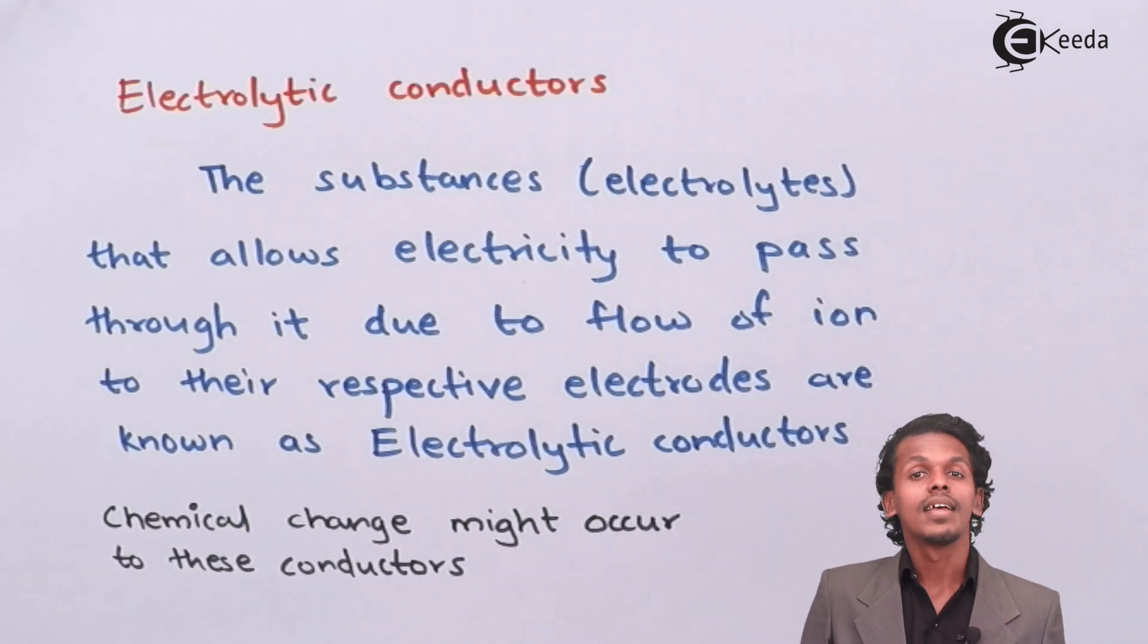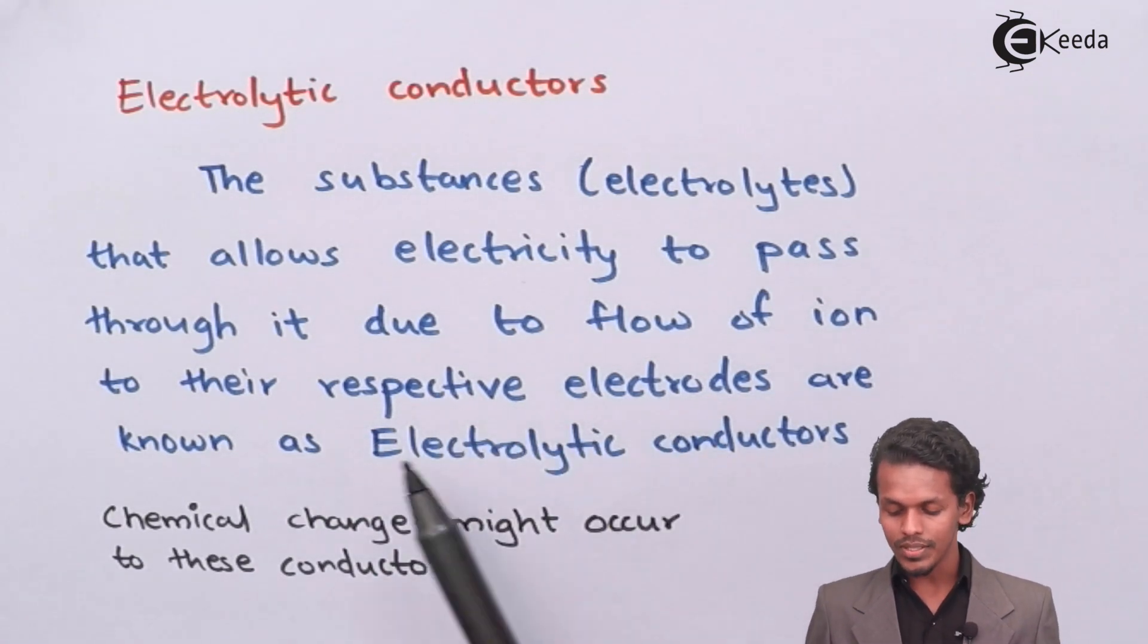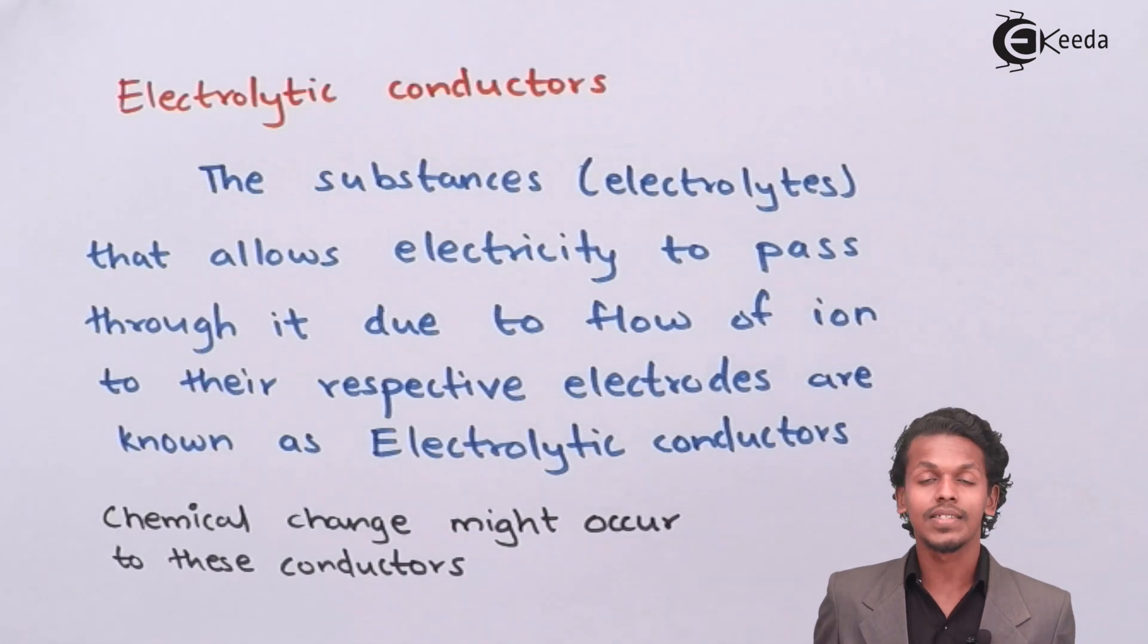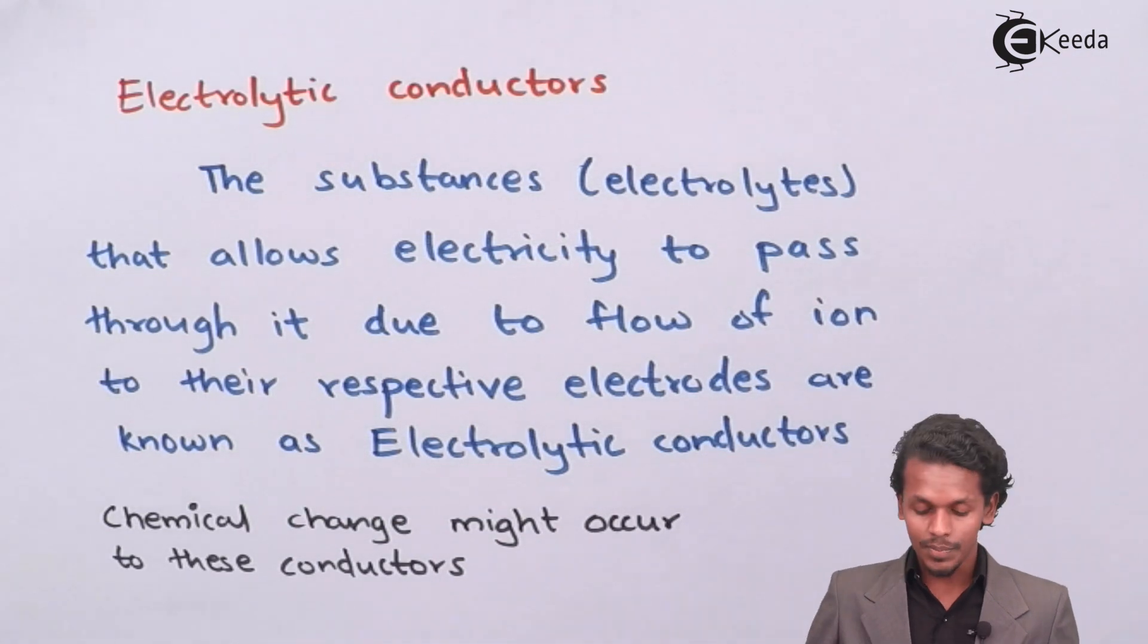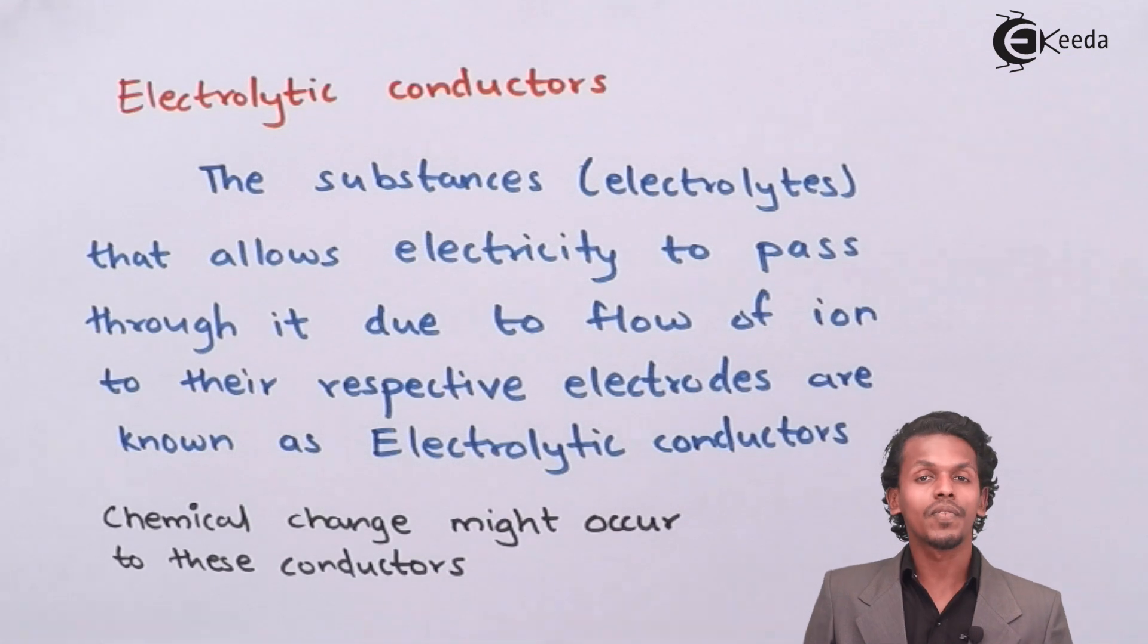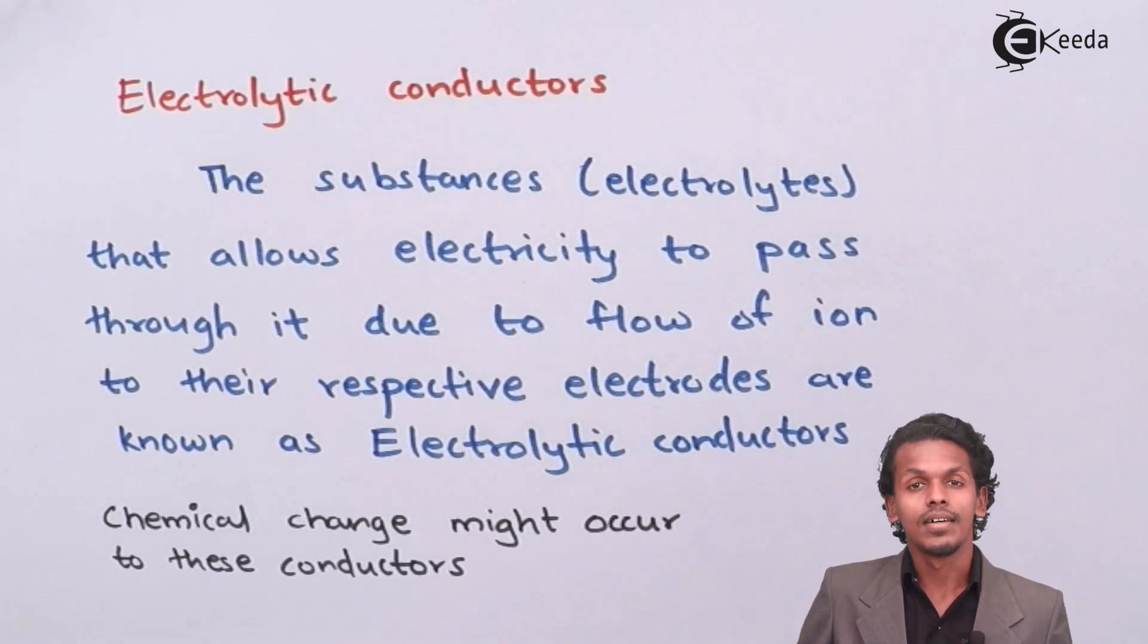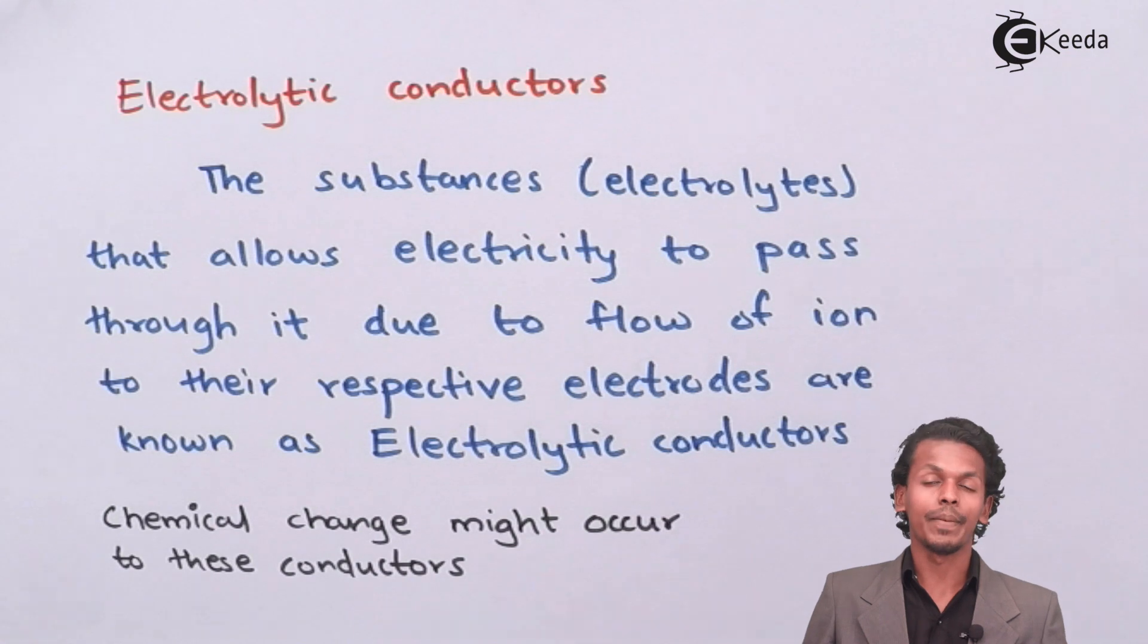Because the electrolytes are made of cation and anion, that particular ion will move towards the respective electrodes, and hence this kind of electrolytes or basically this kind of conductors are known as electrolytic conductors. Examples: aqueous solution of NaCl, aqueous solution of CuSO4, aqueous solution of ZnSO4 or molten NaCl solution - all are known as electrolytic solution because they consist of cation and anion.